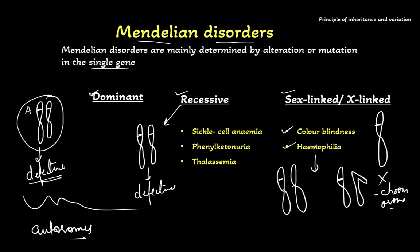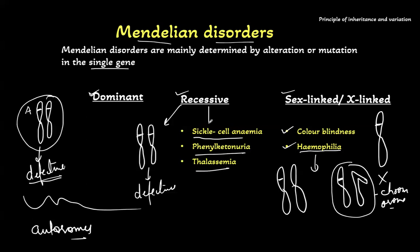Females are also affected, but the percentage is less, specifically in the case of color blindness. In the case of hemophilia, hemophilic females don't exist, because hemophilic females die due to the disease, and that's why they are not existing — females work as carriers. Similarly, in the case of sickle cell anemia, phenylketonuria, and thalassemia, they are recessive disorders. Details of these we will see in the actual class.